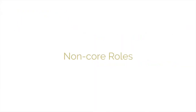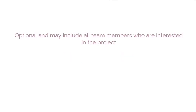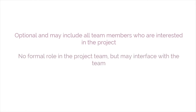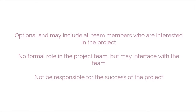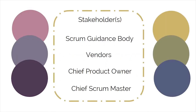Now let's take a closer look at the non-core roles. The non-core roles are optional and may include all team members who are interested in the project. They have no formal role in the project team, but they may interface with the team; however, they may not be responsible for the success of the project. The non-core roles should be taken into account in any Scrum project. Those involved in non-core roles are stakeholders, the Scrum guidance body, vendors, the chief product owner, and the chief Scrum master.